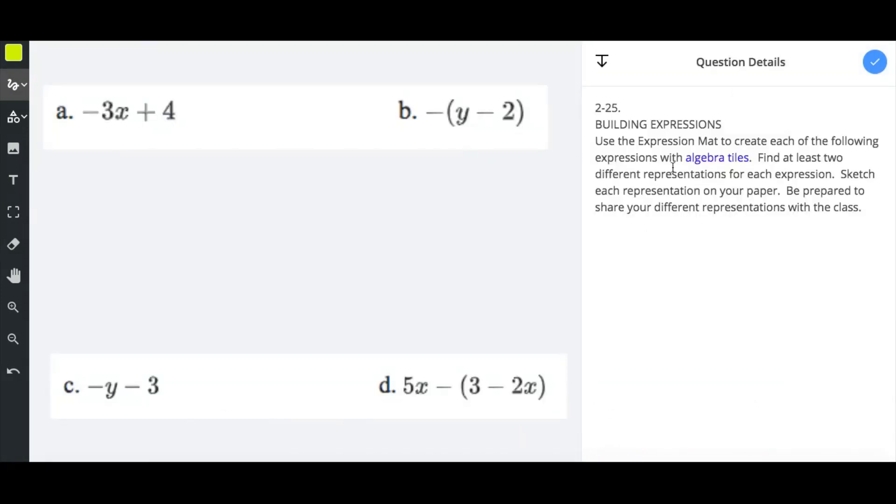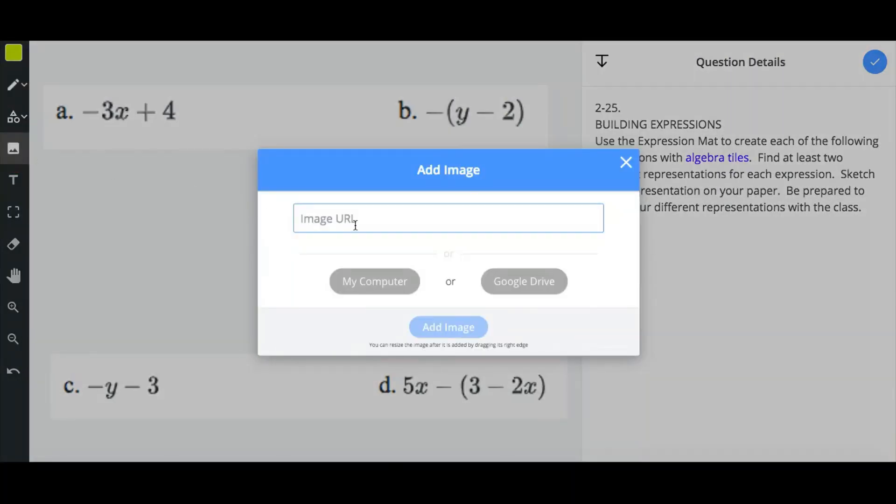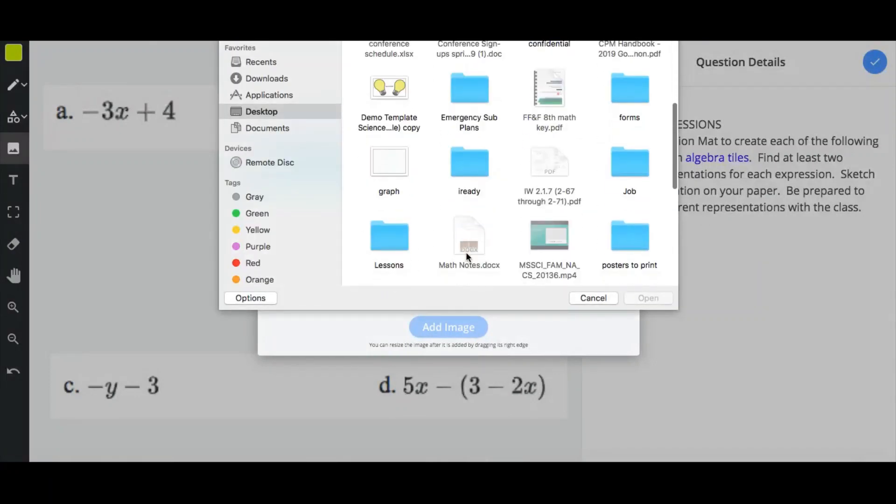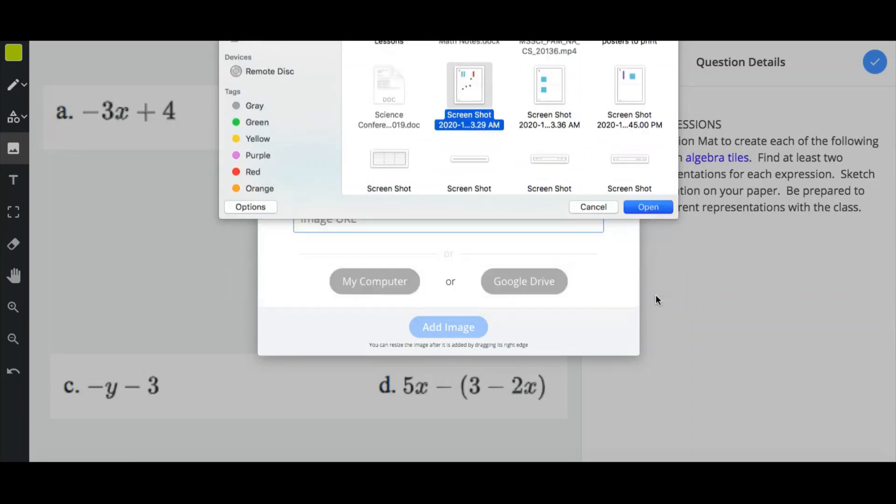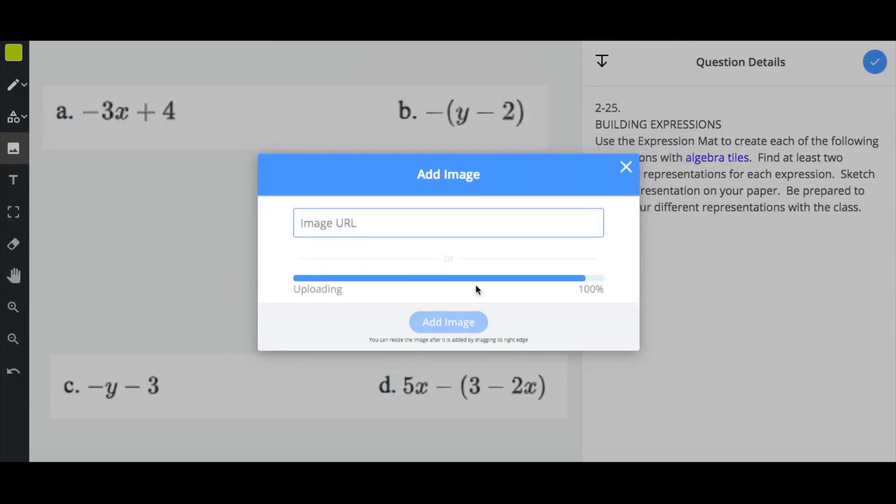If you are asked to insert an image into your whiteboard, you can click on the image icon, click on My Computer, click on your screenshot that you have, or image that you are asked to insert, and add the image.